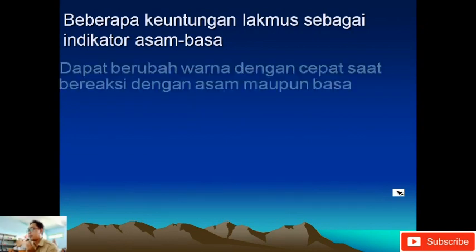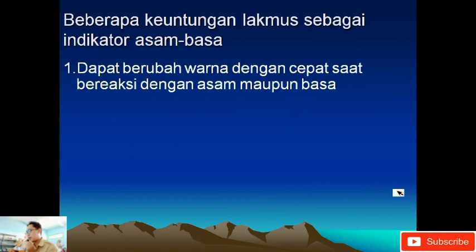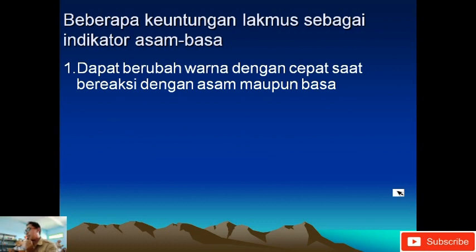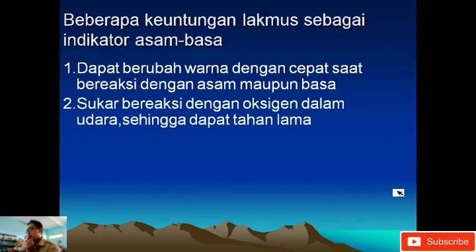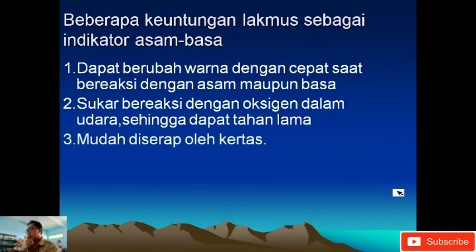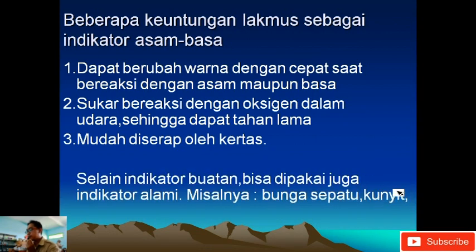Keuntungan lakmus sebagai indikator asam basa: dapat berubah warna dengan cepat saat reaksi dengan asam maupun basa. Misalkan warnanya merah kemudian ditetesi sabun, ternyata berubah menjadi warna biru, maka secara cepat bisa ditentukan bahwasannya zat tersebut memiliki sifat basa. Sukar bereaksi dengan oksigen dalam udara sehingga dapat tahan lama dan tidak mudah berubah. Mudah diserap oleh kertas. Selain indikator buatan, bisa juga dibuat indikator alami.